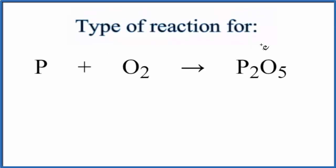In this video, we'll look at the type of reaction for P plus O2 yields P2O5. This is phosphorus plus oxygen gas, and this is diphosphorus pentoxide.